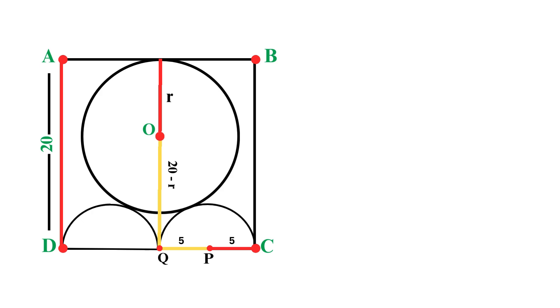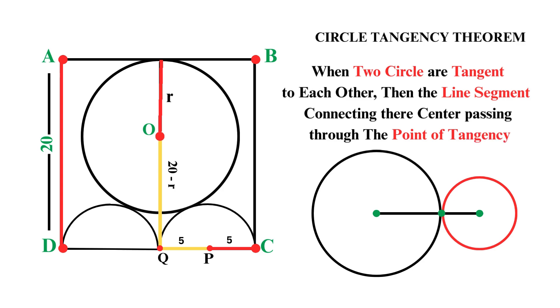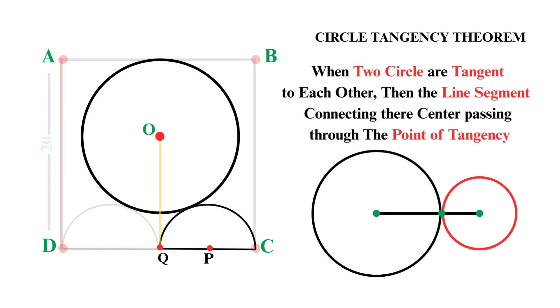Keep this in mind as we'll use it shortly. Now, we're going to apply a fundamental theorem in geometry called the circle tangency theorem. It states that when two circles are tangent to each other, meaning they touch at exactly one point, then the line segment connecting their centers passes through the point of tangency. Let's apply this to our situation. Since we know that our large circle and the right semicircle are tangent to each other, the line segment OP connects their centers.